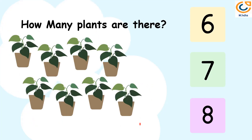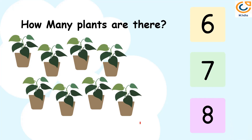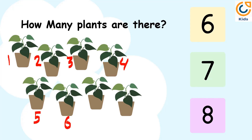How many plants are there? Let's count the number of plants. 1, 2, 3, 4, 5, 6, 7, 8. There are 8 plants. So the answer is 8.